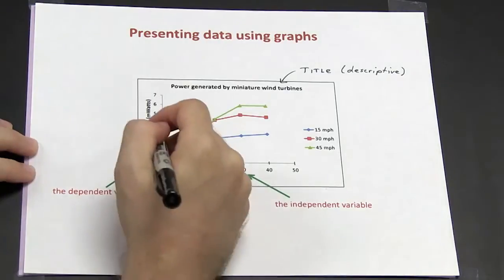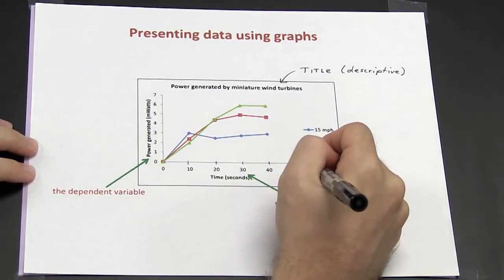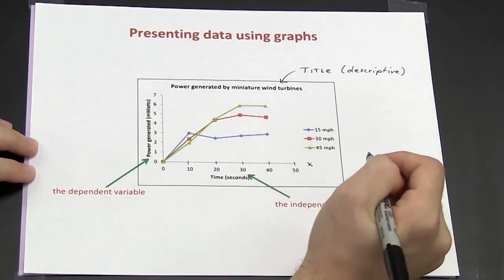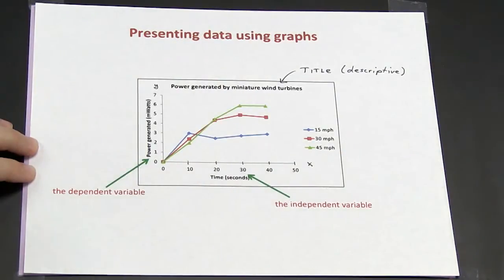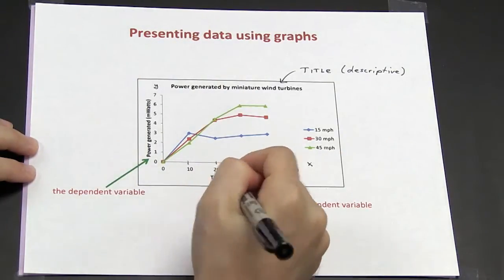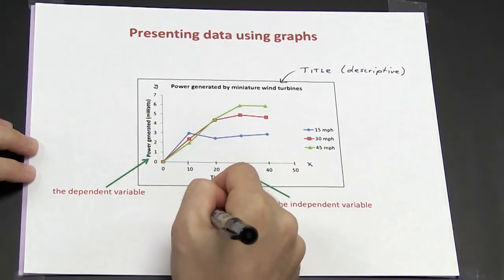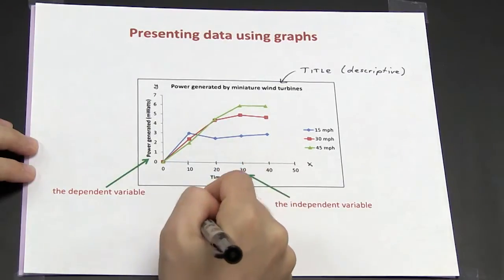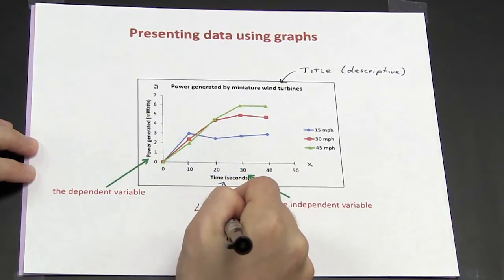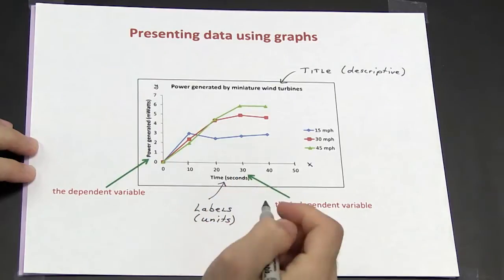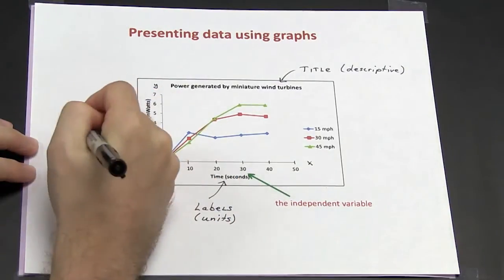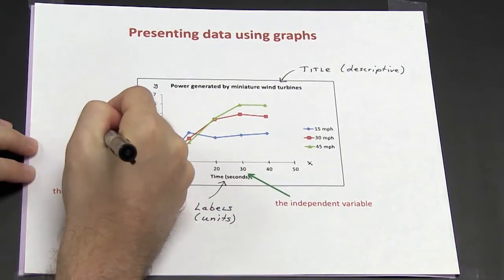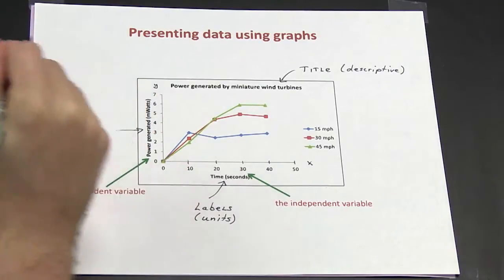I have two axes: my horizontal is my x-axis and my vertical is my y-axis. Both axes have labels as well as the units that are associated with them.